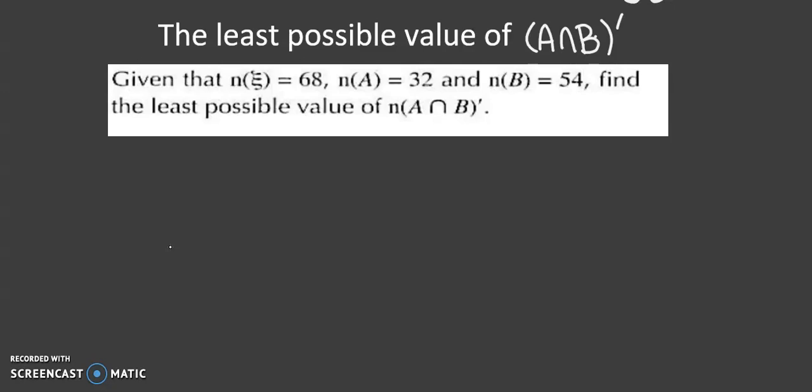In this question I'm going to tell you how to find the least possible value of A intersection B whole complement. Now in this question, the number of elements in universal set is 68, the number of elements in A is equal to 32, and the number of elements in B is equal to 54.